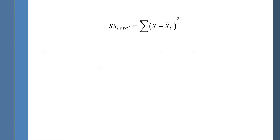Let's review the formulas. First, we have the sum of squares total, which you would also use with one-way ANOVA. What we do here is take every score on variable x, subtract the grand mean from it — the grand mean is the mean of everybody in the experiment — and then square that deviation score. Once you've done it for all observations in the dataset, you add them all up.